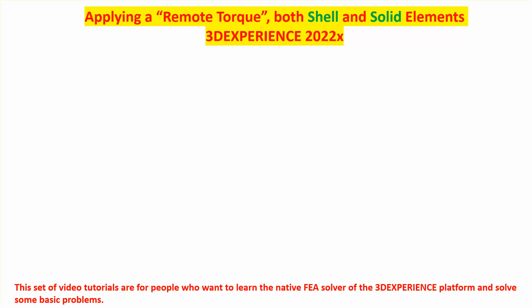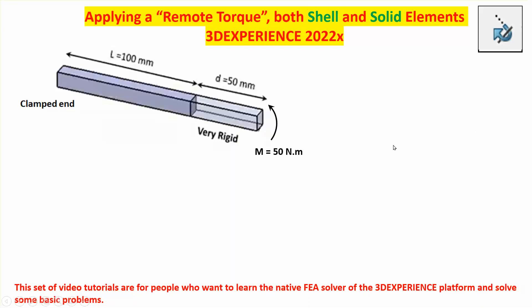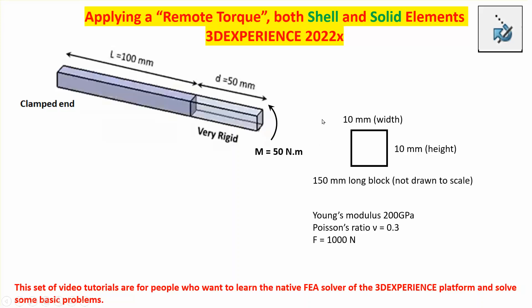I've already done a video for the remote force icon, but this video covers the remote torque. The icon for remote torque looks like a moment or torque applied at a distance — that's the 'remote' concept. I'll explain this in the context of a simple model. The geometry is a cantilever beam: one end is clamped, the other end is subject to an applied moment. The last 50 millimeters is very rigid, so no stresses develop there, and it does not even have to be modeled.